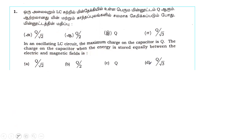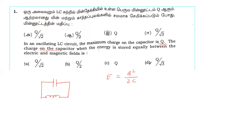In an oscillating LC circuit, there is a capacitor and an inductor. Initially, the capacitor has maximum charge Q, stored in the form of electric field energy. We need to find the charge on the capacitor when the energy is stored equally between the electric and magnetic field.